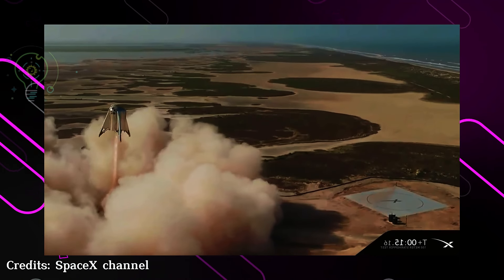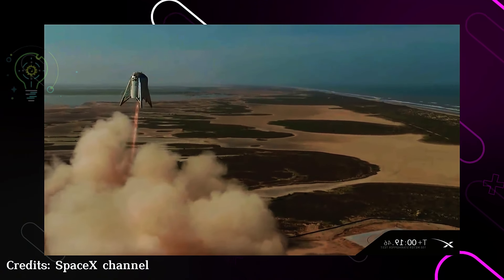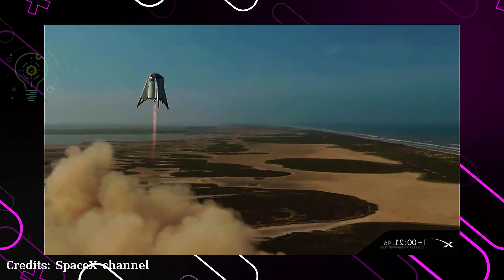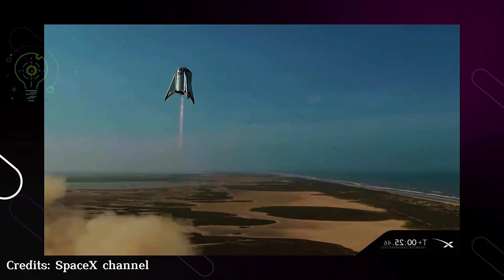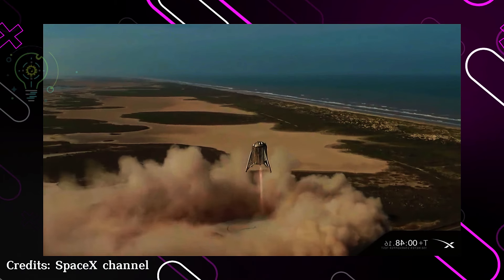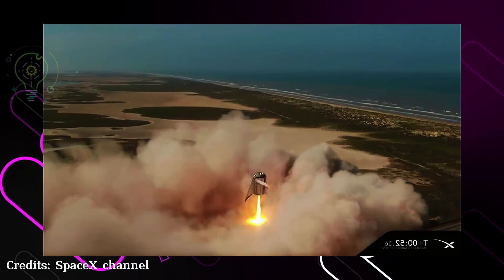Number nine: Starhopper. Starhopper was the first prototype of Starship, performing key atmospheric tests to ensure SpaceX's propulsion systems were ready for longer missions. With Starhopper, SpaceX was able to carry out test hops that pushed forward the development of their interplanetary rocket.